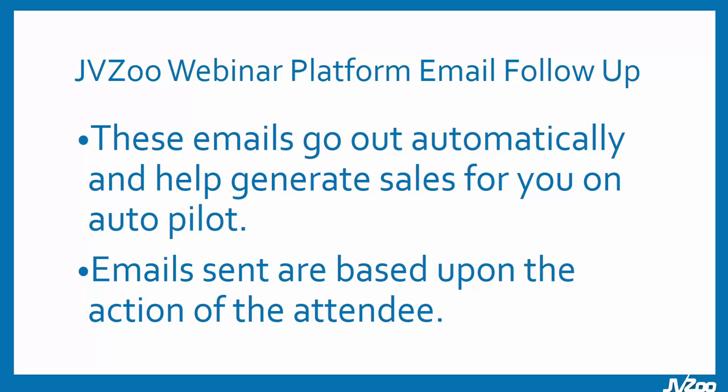These emails go out automatically and help generate sales for you on autopilot. There's nothing else you have to do once a person registers — emails are sent out based upon the action of the attendee. If they watched long enough to see the offer, they'll get a direct link. If they didn't watch it, they'll get a replay link. And if an affiliate promoted it, the affiliate link is embedded within that email so they can get credit as well.